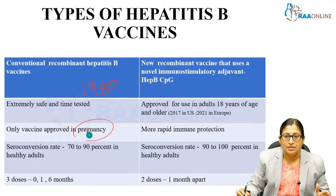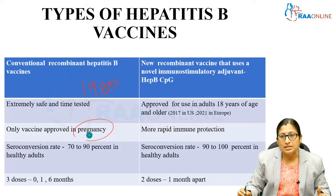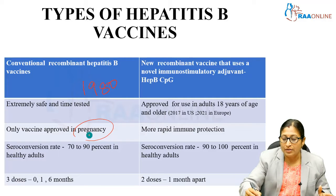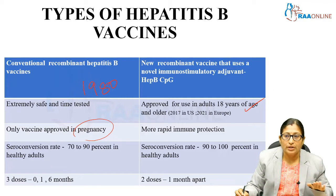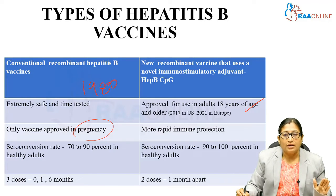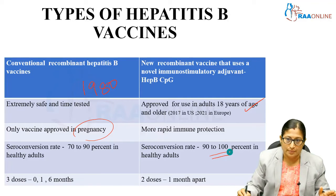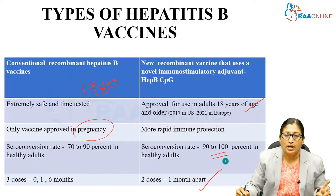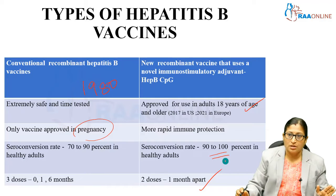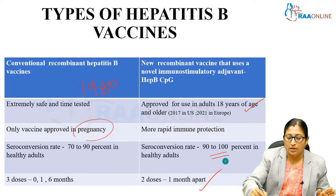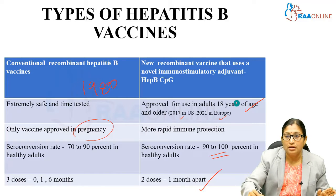The new recombinant vaccine which uses the novel immunostimulatory CPG adjuvant is approved for use in adults only — above 18 years of age. It cannot be used in the pediatric population or in pregnancy. Its advantage is an accelerated immune response with rapid immune protection, and it claims a seroconversion rate of around 90 to 100 percent in healthy adults. Because of this accelerated response, just two doses one month apart is enough. This vaccine was approved in the US in 2017 and in Europe in 2021.